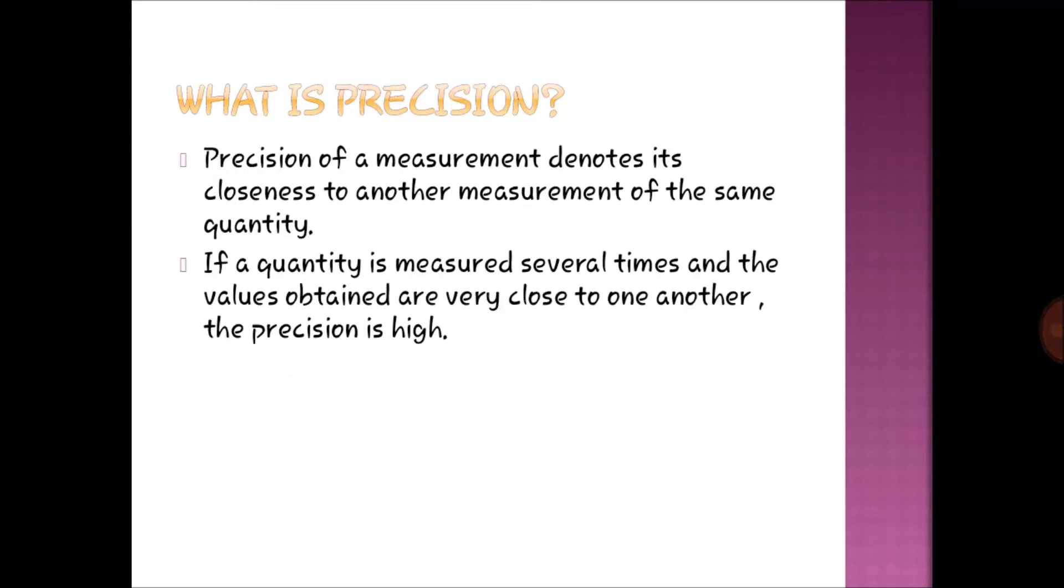Precision of a measurement denotes its closeness to another measurement of the same quantity. If a quantity is measured several times and the values obtained are very close to one another, the precision is high.